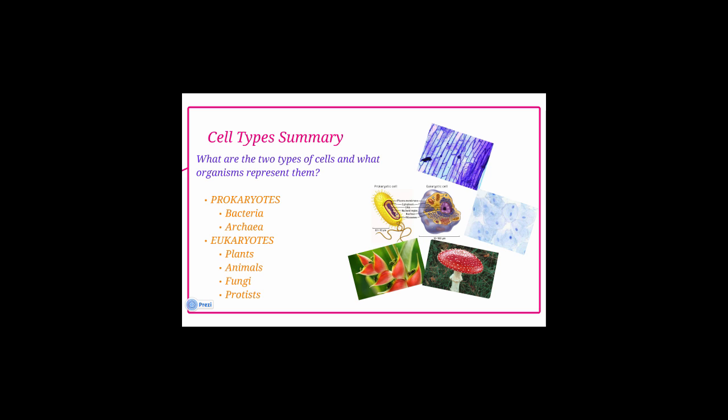In this class, our cells are going to be broken up into two large groups. We have the prokaryotes, which include the bacteria and archaea, and we have the eukaryotes, that basically encompass everything else — the plants, the animals, the fungus, and the protists.